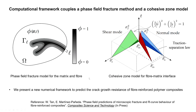We use a phase field fracture model to predict matrix and fiber fracture, and then we use the cohesive zone model for the fiber-matrix interface to capture fiber-matrix debonding. This helps us predict the crack growth resistance of fiber-reinforced polymer composites in a very robust and efficient manner.